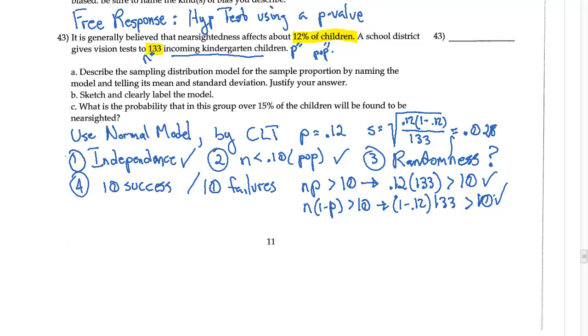So that's our justification. Our justification is the four assumptions. I can use the normal model, and that's my center. Now for B, I want you to sketch and clearly label the model. With my normal model, I'm going to draw my line, and I go up, down, give myself a nice bell curve. In the center goes my 0.12.